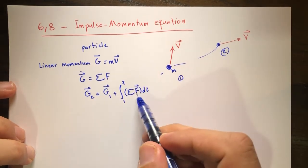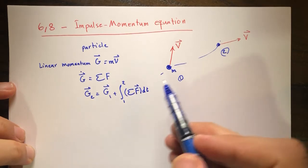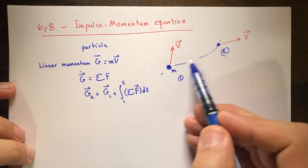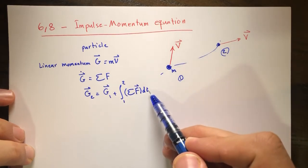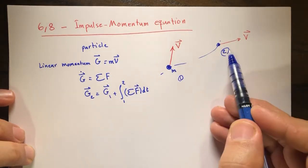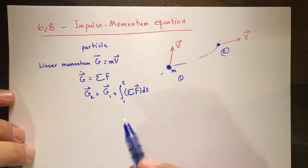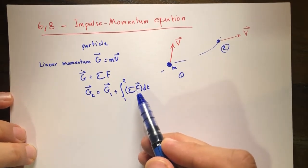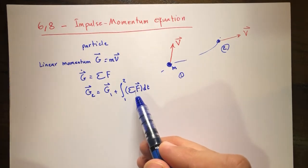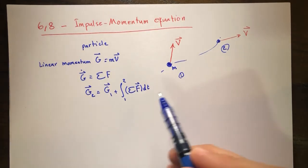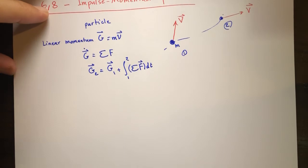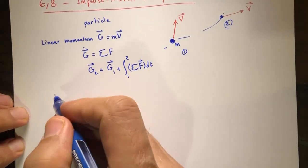Sometimes we know the summation of all forces on this particle along its path, so we can integrate it over time and add it to g1 to find g2. In many problems, some of the forces were equal to zero, and in that case g1 was equal to g2 — conservation of linear momentum for a particle or a system of particles.